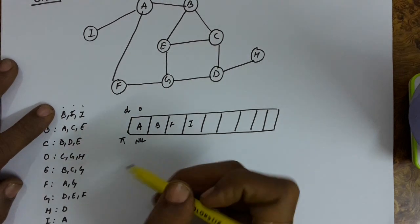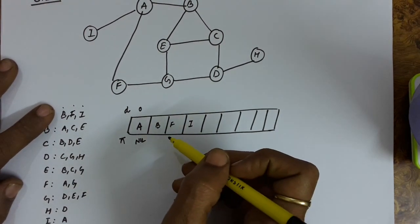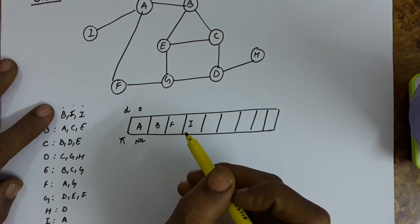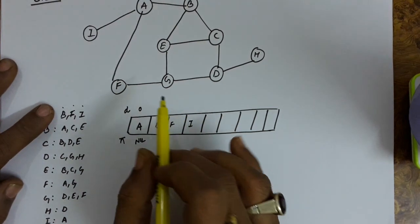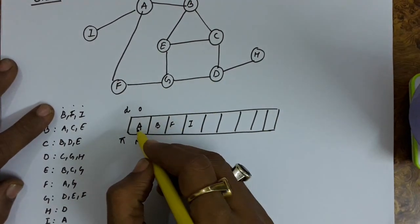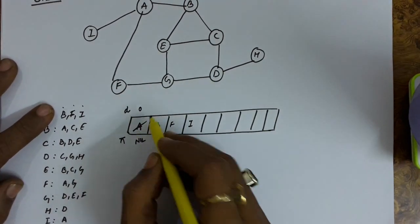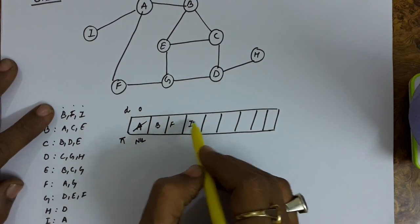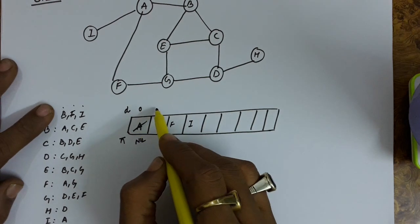We can just do some shortcuts like if a vertex is there in the queue obviously its color is white or black. If the vertex has got deleted from the queue obviously its color is black. So we have seen all the connections from A so delete A.